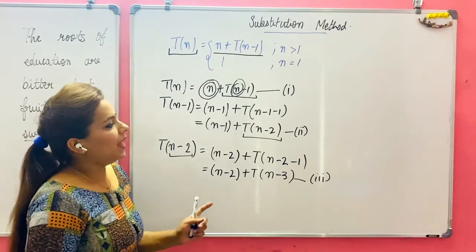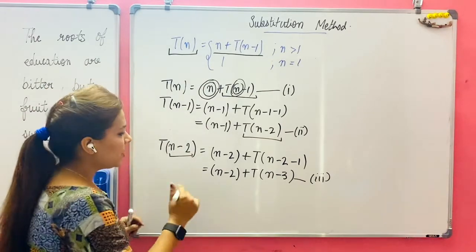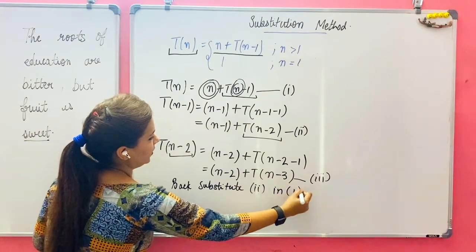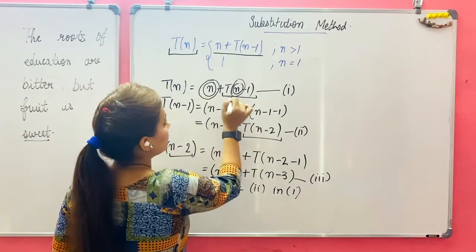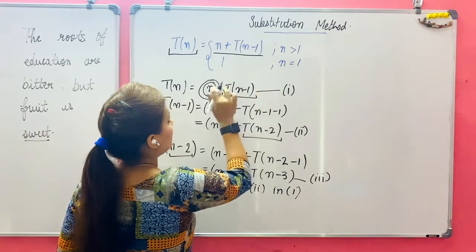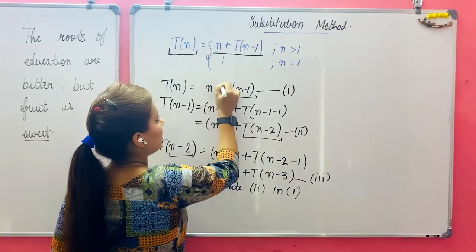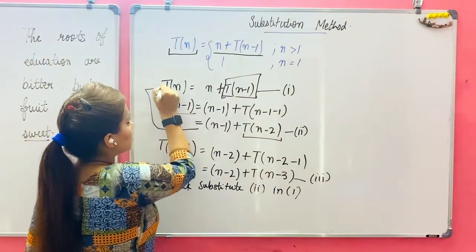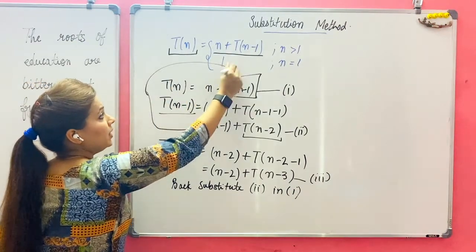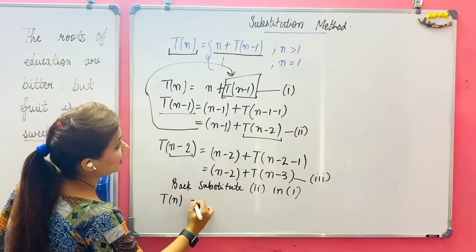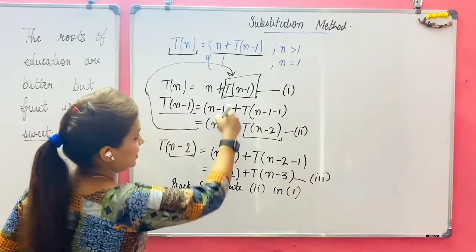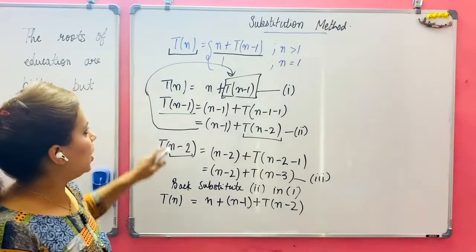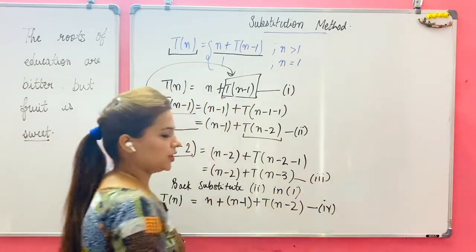In back substitution, we go until we have two inputs and then we start replacing the values. Back substitution: substitute equation 2 into equation 1. Look at the main expression — it contains n plus T(n-1). So instead of T(n-1), put the expression from equation 2 in place of T(n-1). Your T(n) becomes: T(n) = n + (n-1) + T(n-2). This is my fourth expression.